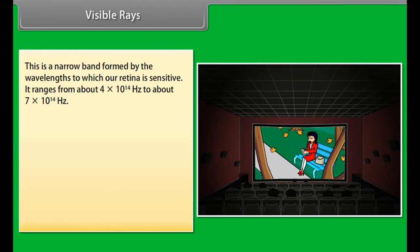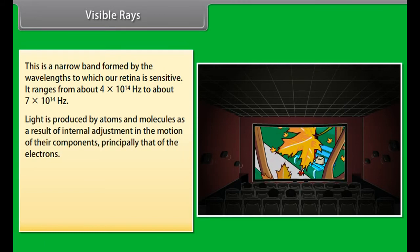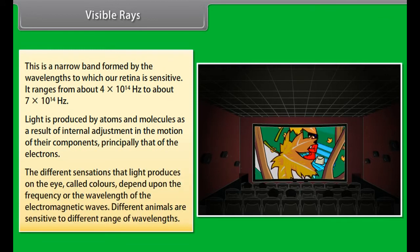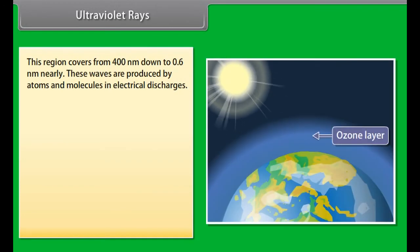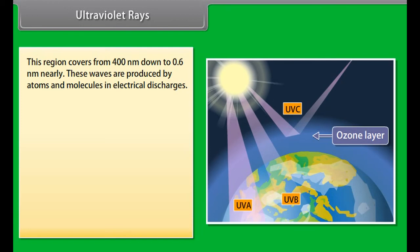Infrared waves. This covers wavelengths from 10 raised to the power minus 3 meter down to 7.8 into 10 raised to the power minus 7 meter. These waves are produced by molecules and hot bodies and are sometimes referred to as heat waves. They have many applications in industry, medicine, astronomy, etc. Infrared radiation also plays an important role in greenhouse effect. Infrared detectors are used in earth satellites, both for military purposes and to observe growth of crops. Infrared waves are widely used in the remote switches in the household.